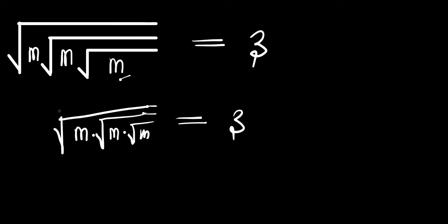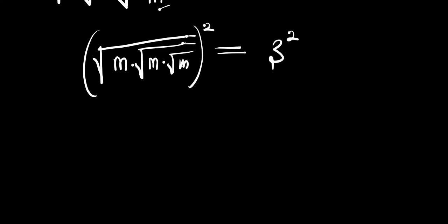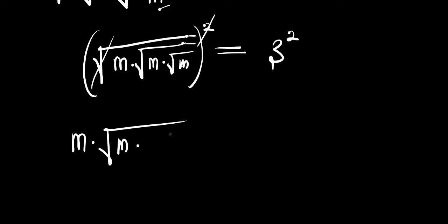What we are going to do is simply take the square of both parts of this equation. The square root here will be cancelled by the square, so we will simply have m times root of m times root of m, and this equals 9.